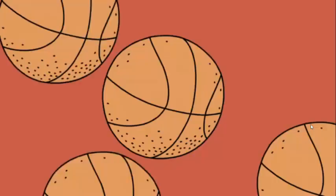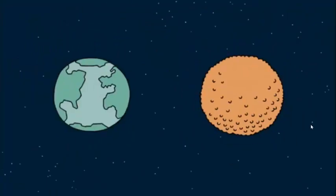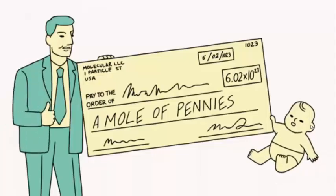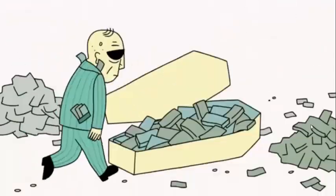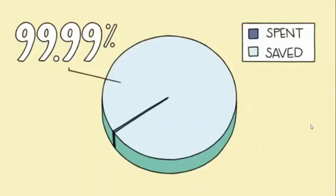If you had a mole of basketballs, you could create a new planet the size of the Earth. If you received a mole of pennies on the day you were born and spent a million dollars a second until the day you died at the age of 100, you would still have more than 99.99% of your money in the bank.